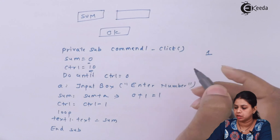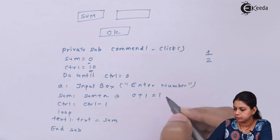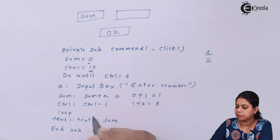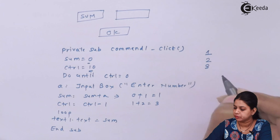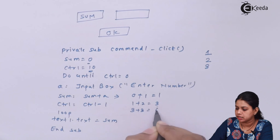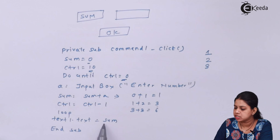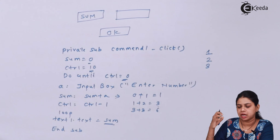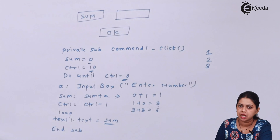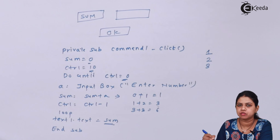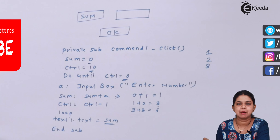Each iteration, an InputBox prompts the user to enter a number. Sum equals sum plus the entered number a. Control decrements by one each iteration. For example, entering 1 then 2 then 3 gives sum 6 after three iterations. This continues until control reaches zero. The final sum, such as 55 for numbers 1 to 10, is displayed in Text1.